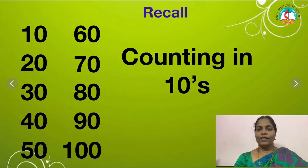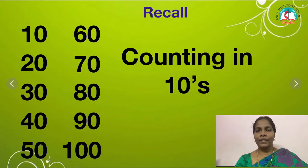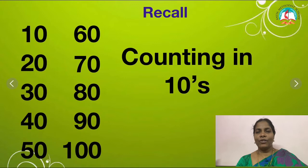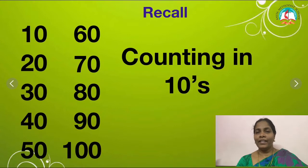Look at the board. What is this, children? Counting in tens. Very good. Shall we read the numbers? 1 and 0 is 10, 2 and 0 is 20, 3 and 0 is 30, 4 and 0 is 40, 5 and 0 is 50, 6 and 0 is 60, 7 and 0 is 70, 8 and 0 is 80, 9 and 0 is 90, 1 0 and 0 is 100. Very good.